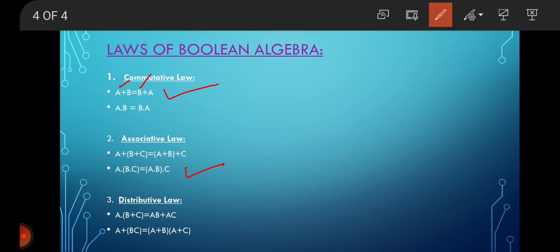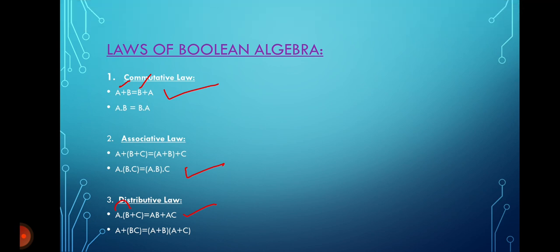The third is the Distributive Law. The first form is: A AND (B OR C) equals AB OR AC — you distribute A into each term. The second form is: A OR (B AND C) equals (A OR B) AND (A OR C). These are the laws of Boolean algebra. We will discuss examples of these laws in the next lecture. Thank you.